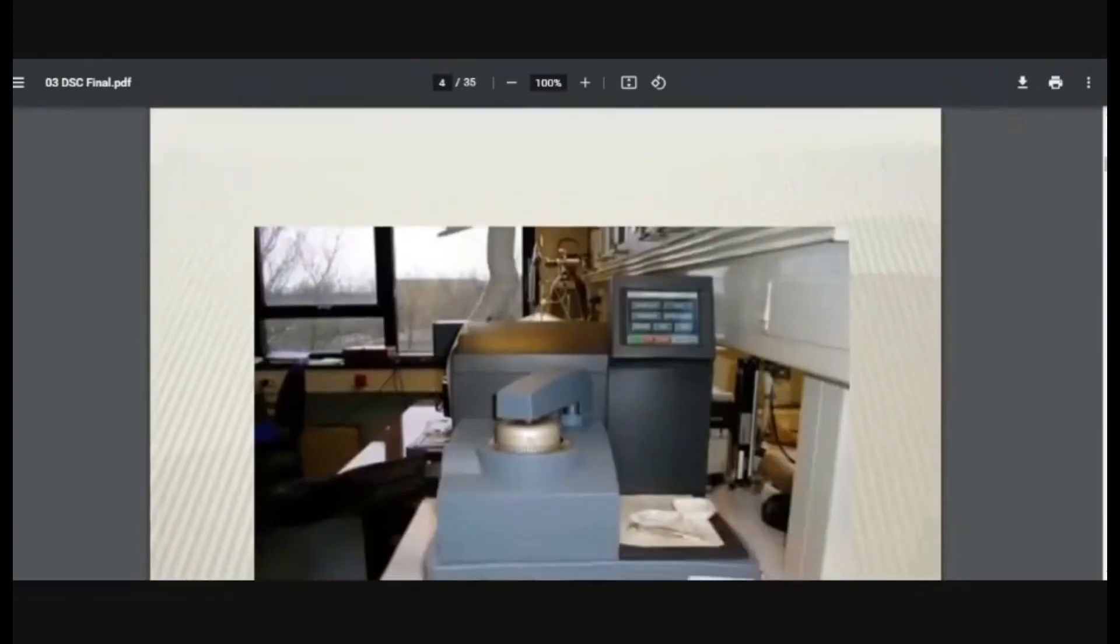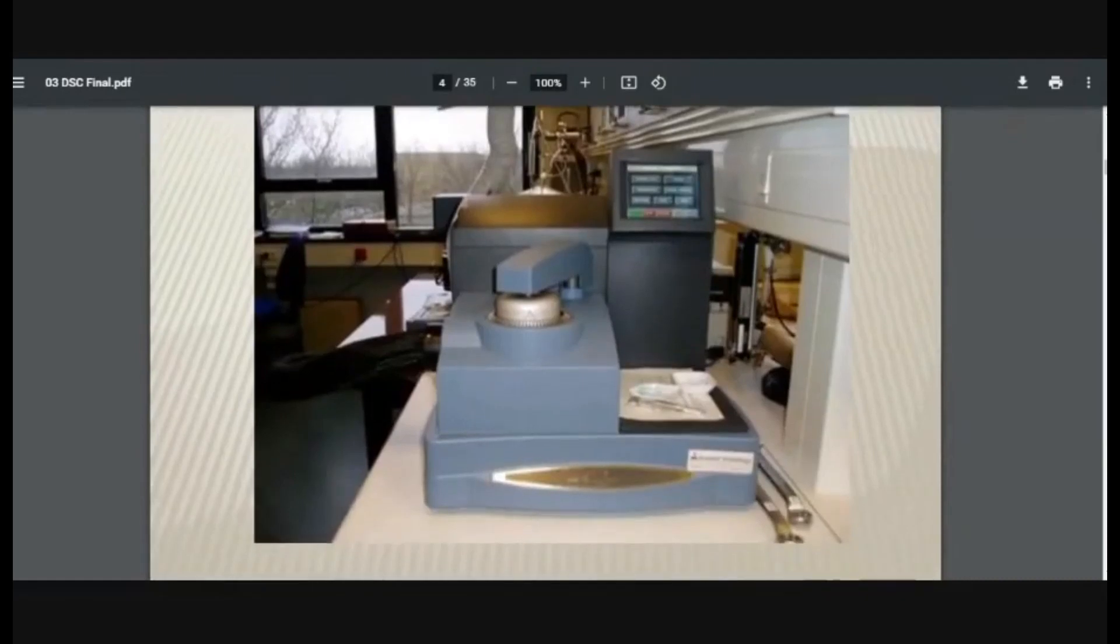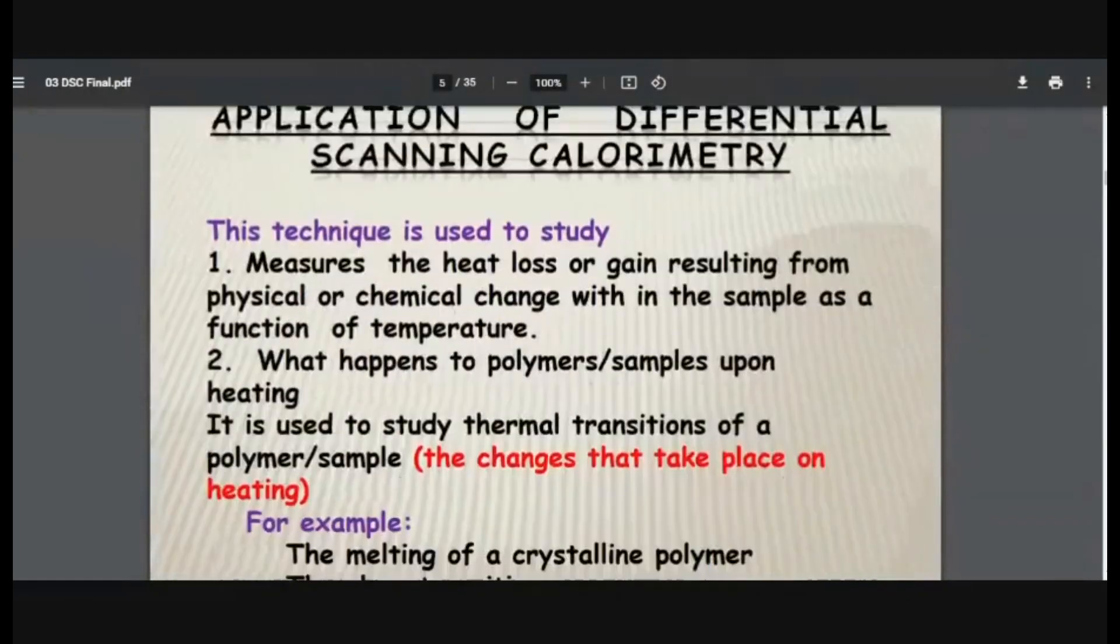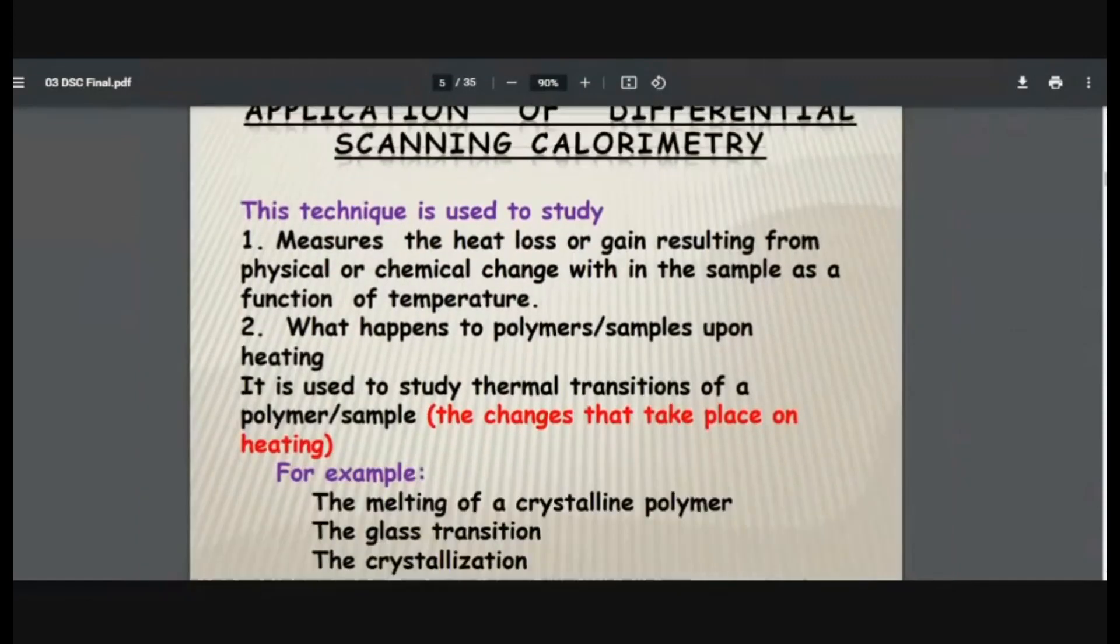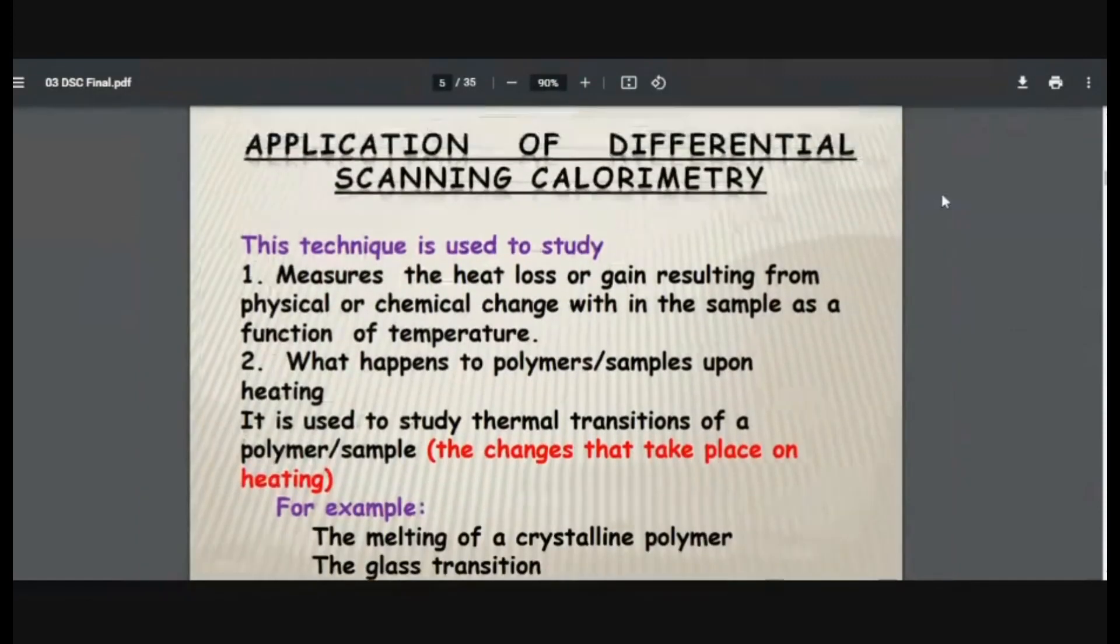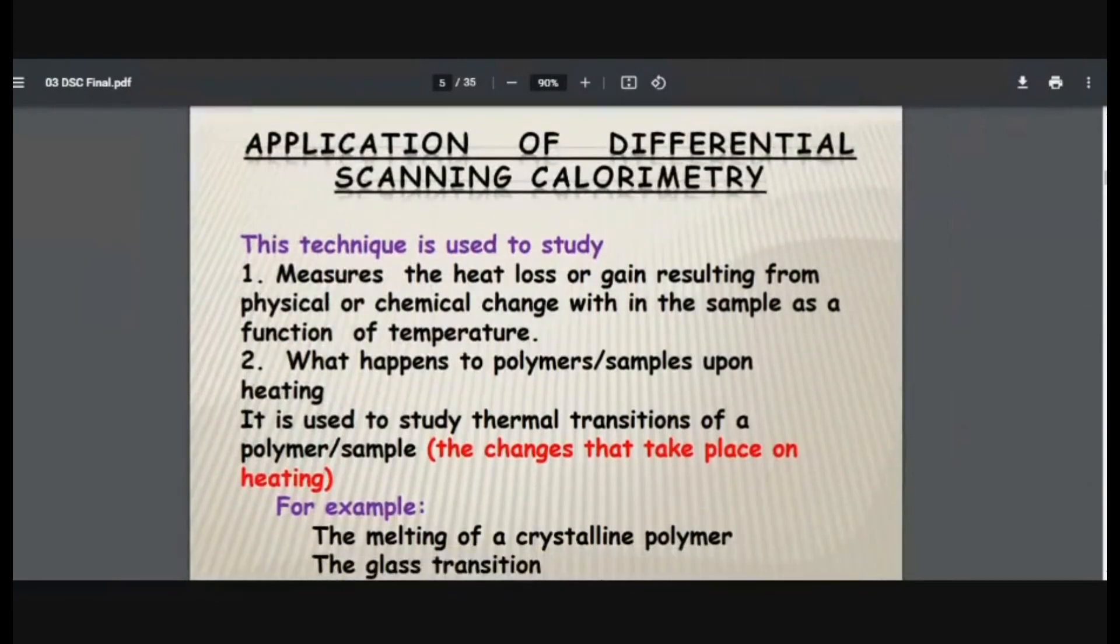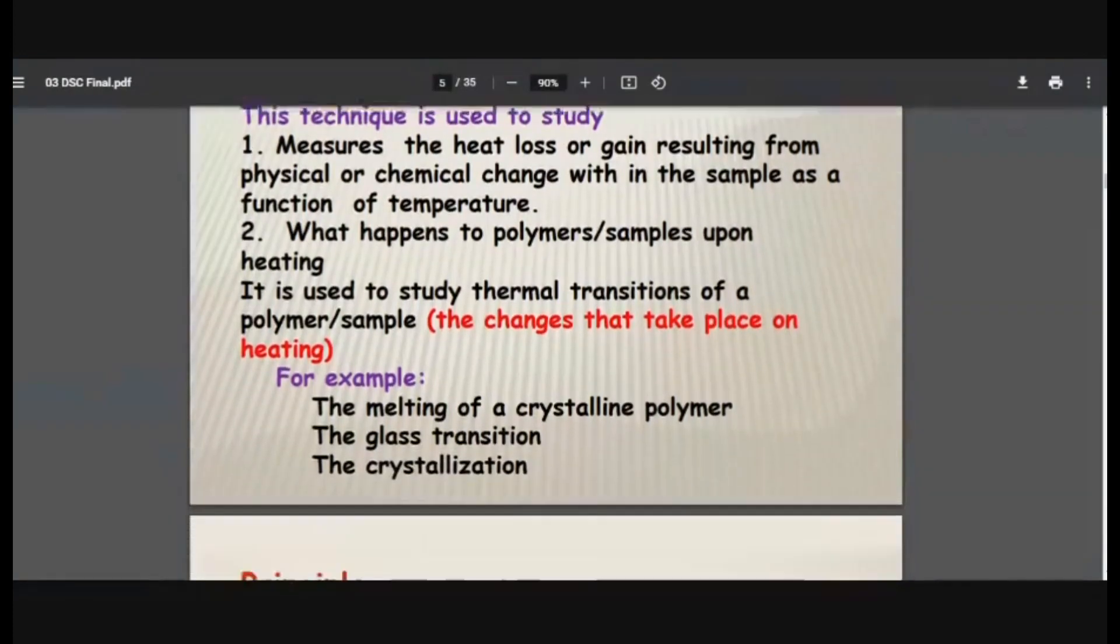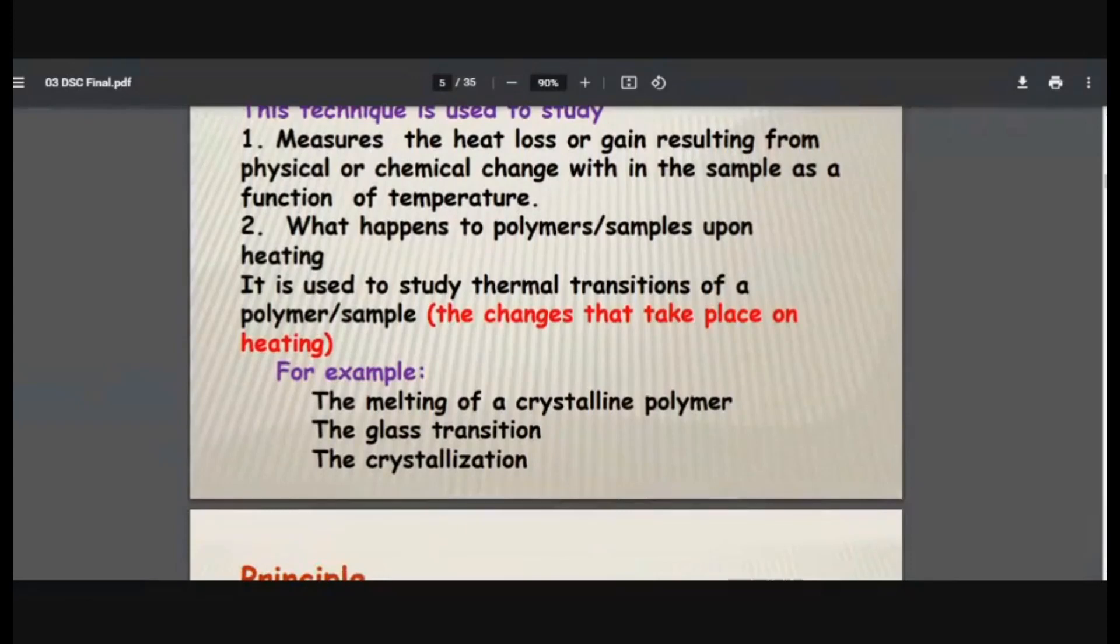Again, this is the actual instrument, differential scanning calorimeter. Now we will quickly run through the applications of differential scanning calorimeter. First is, this technique is used to study and measure the heat loss or gain resulting from physical or chemical changes within the sample as a function of temperature. This is very simple. What happens to polymer or sample upon heating? It can be studied using this method. It is used to study thermal transition of a polymer over a sample - the changes that can take place on heating.